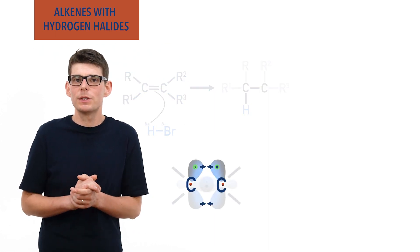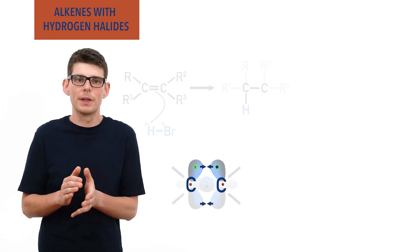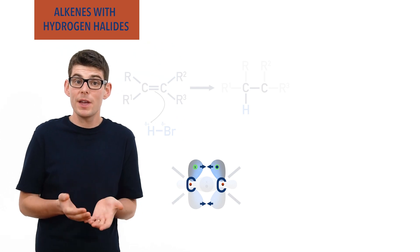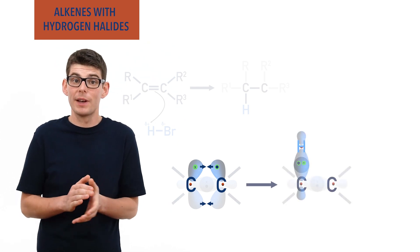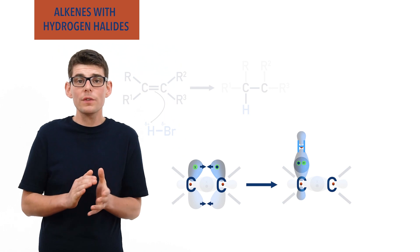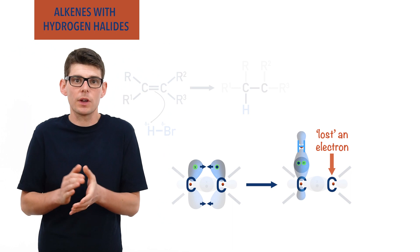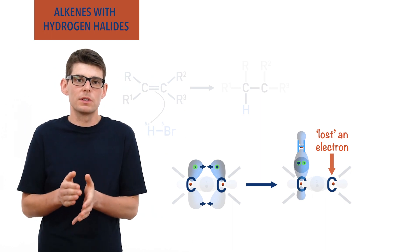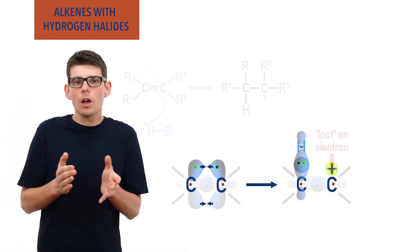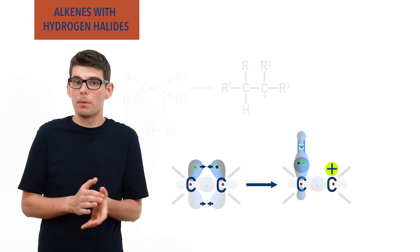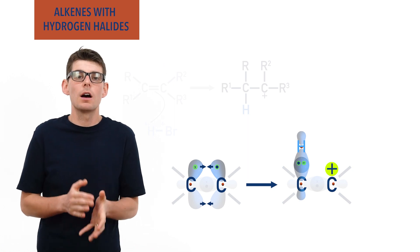The pi bond contains one electron from each of the carbon atoms, meaning as it breaks and a new bond with that pair of electrons gets made, one of the carbon atoms effectively loses an electron. As a result, this other carbon atom ends up with a positive charge. An ion that contains a carbon atom with a positive charge is called a carbocation.